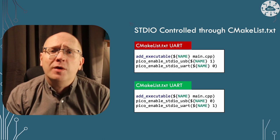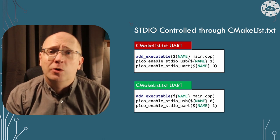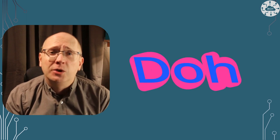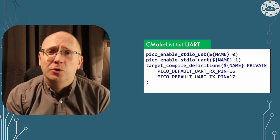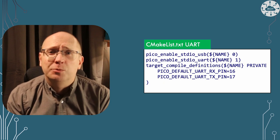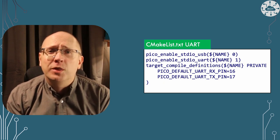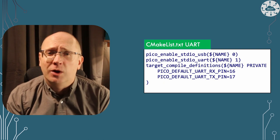But what if I've used GPIO 0 and 1 for other things? I've done that on my projects. Well, it's a fairly easy configuration too, through CMake, so I can move the standard IO to beyond GPIO 16 and 17 with a couple more lines of CMake configuration. Let me explain all this in a little more detail.